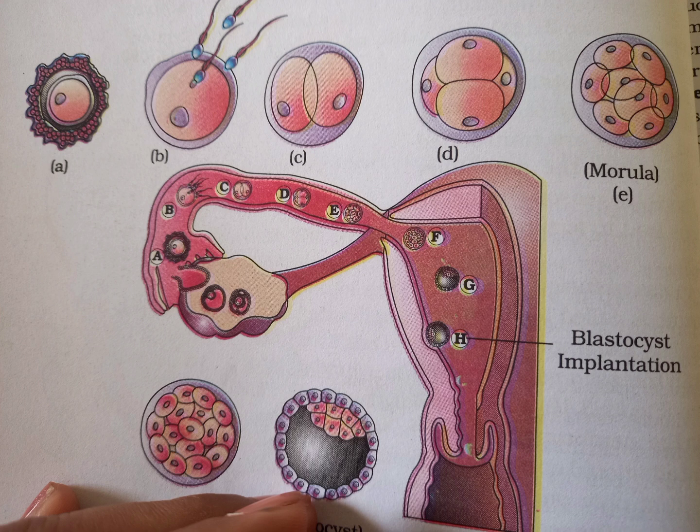The morula continues to divide and transforms into the blastocyst — a cavity-like structure — as it moves further into the uterus. The blastomeres in the blastocyst are arranged into an outer layer called the trophoblast and an inner group of cells attached to the trophoblast called the inner cell mass.